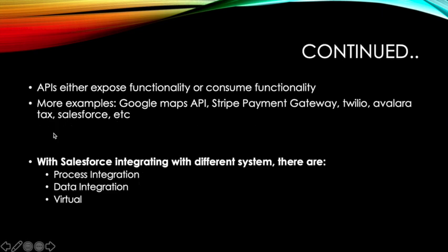APIs can either consume functionality, which we've seen examples of, or also expose functionality — a lot of developers build an API and expose it to a different system. More examples include Google Maps API, Stripe, Twilio, Avalara for taxes, and Salesforce itself is also an API.